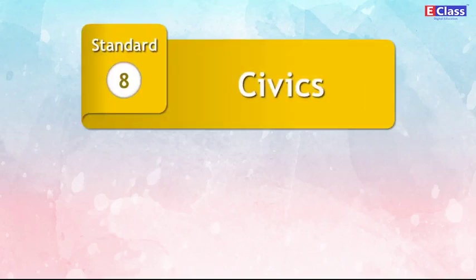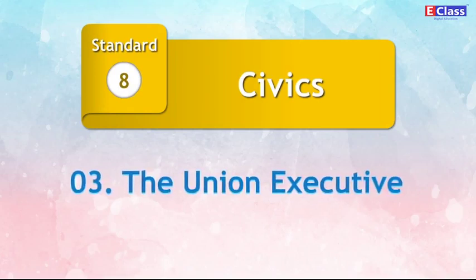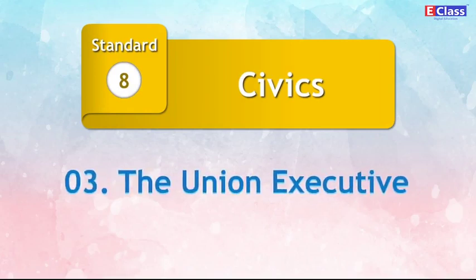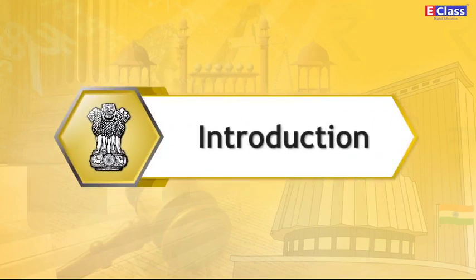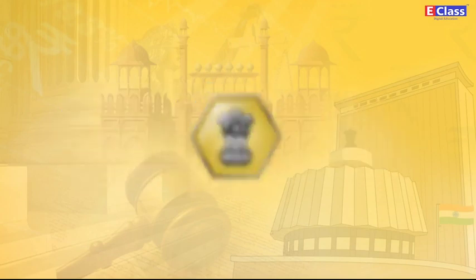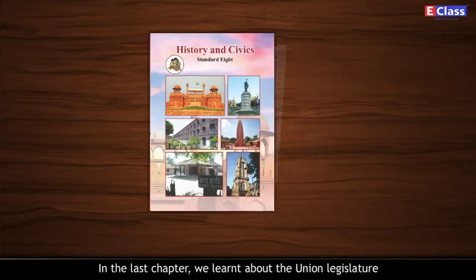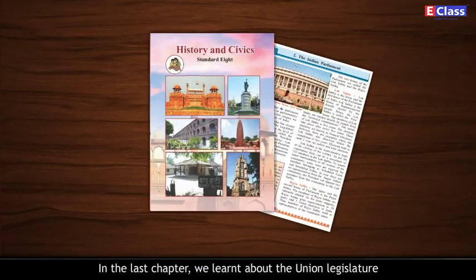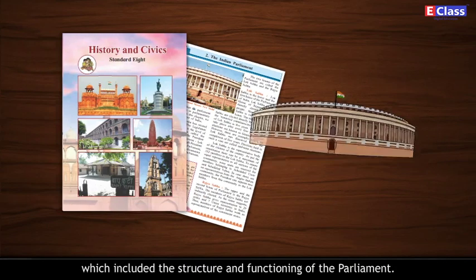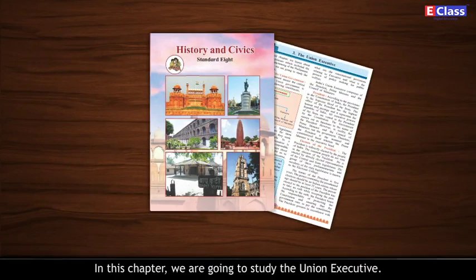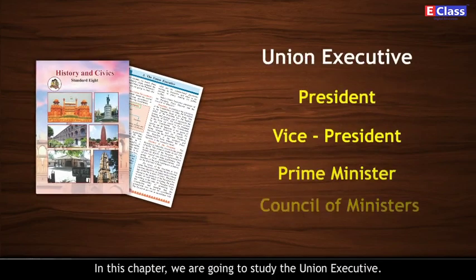Standard 8 Civics, Chapter No. 3 – The Union Executive. In the last chapter, we learnt about the Union Legislature, which included the structure and functioning of the Parliament. In this chapter, we are going to study the Union Executive.